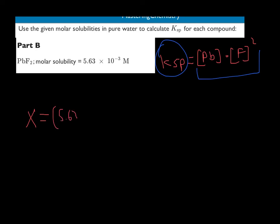2 times 5.63 times 10 to the minus 3 squared. Alright, so kind of like chemical equilibrium and acid base, just think of molar solubility as the concentration. That's what goes here.